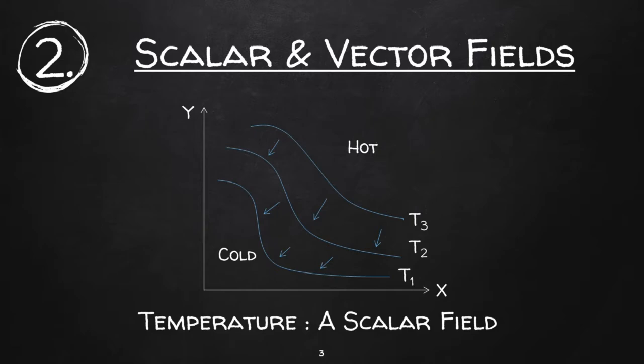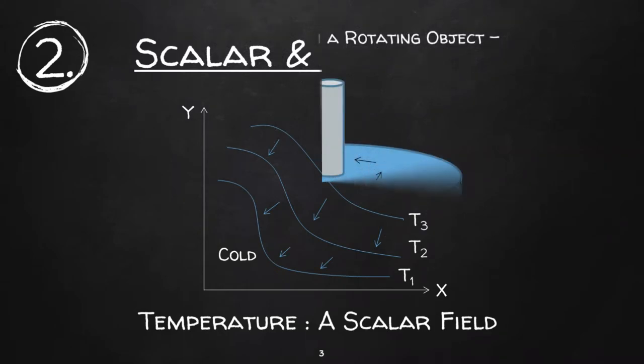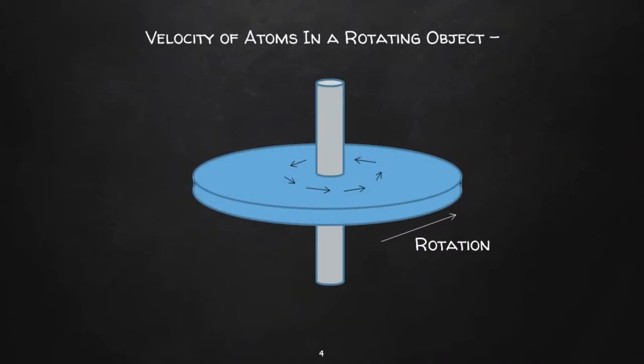Now let's talk about vector fields. Heat flowing from a hotter region to a colder region or the velocity of the atoms in a rotating object is an example of a vector field. The magnitude of the vector heat flow at a point is the amount of thermal energy that passes per unit time and per unit area through an infinitesimal surface area at right angles to the direction of flow.